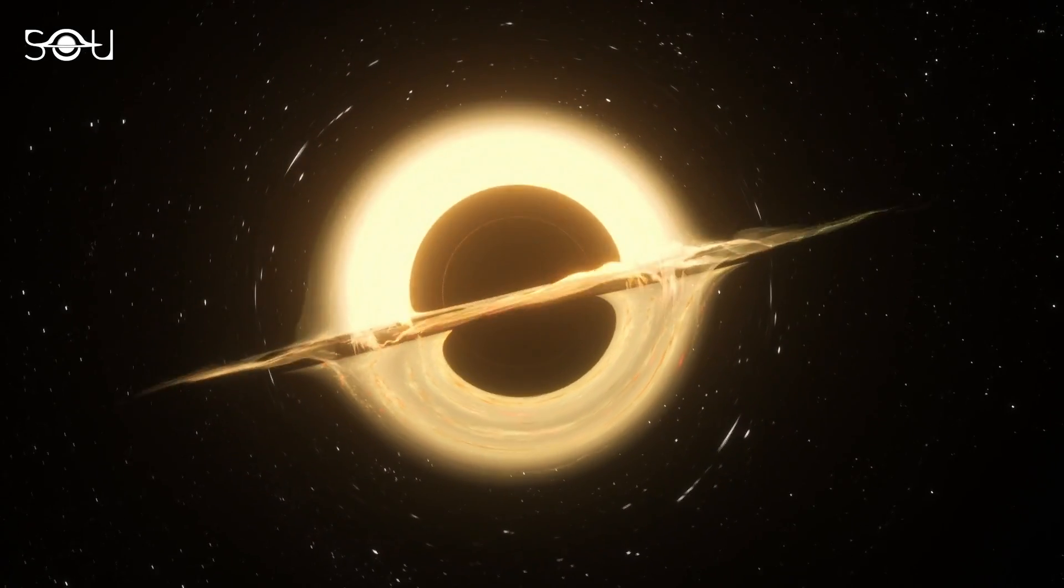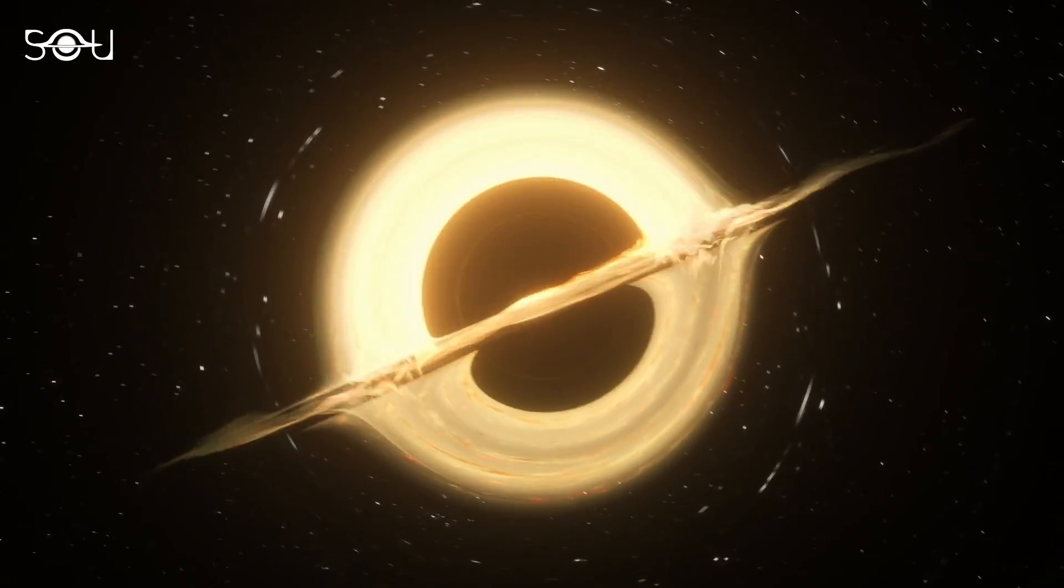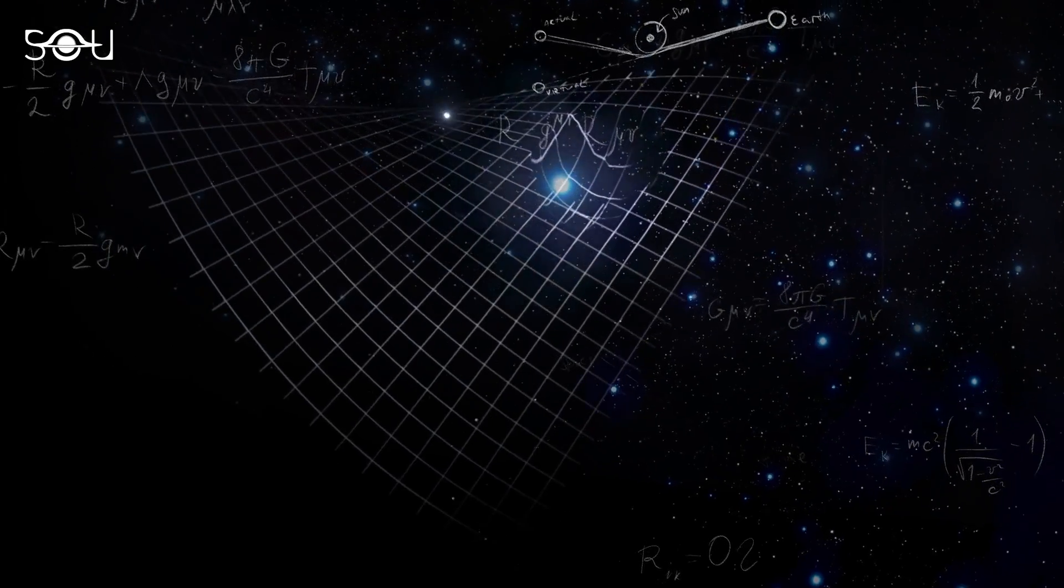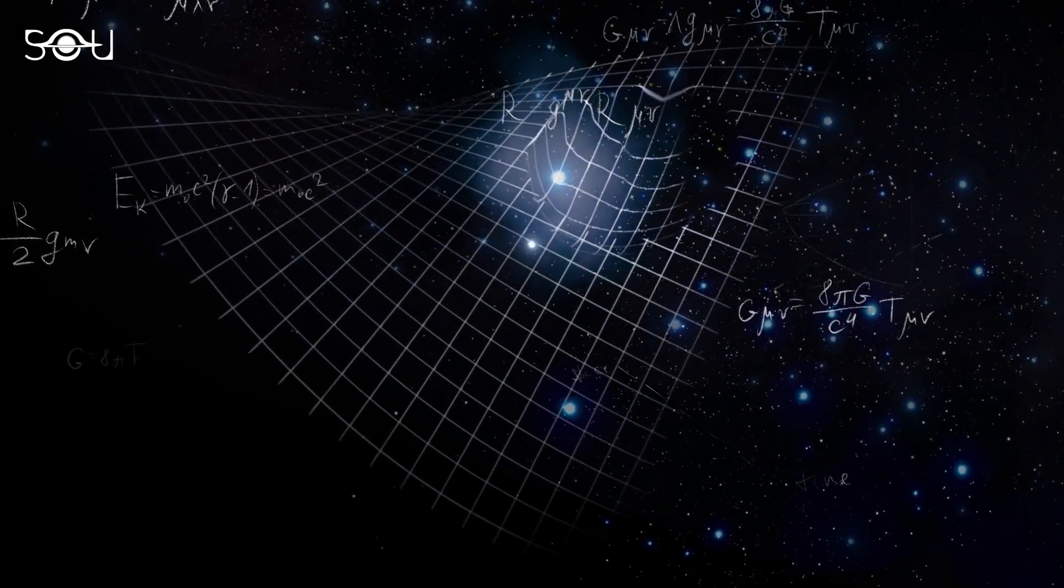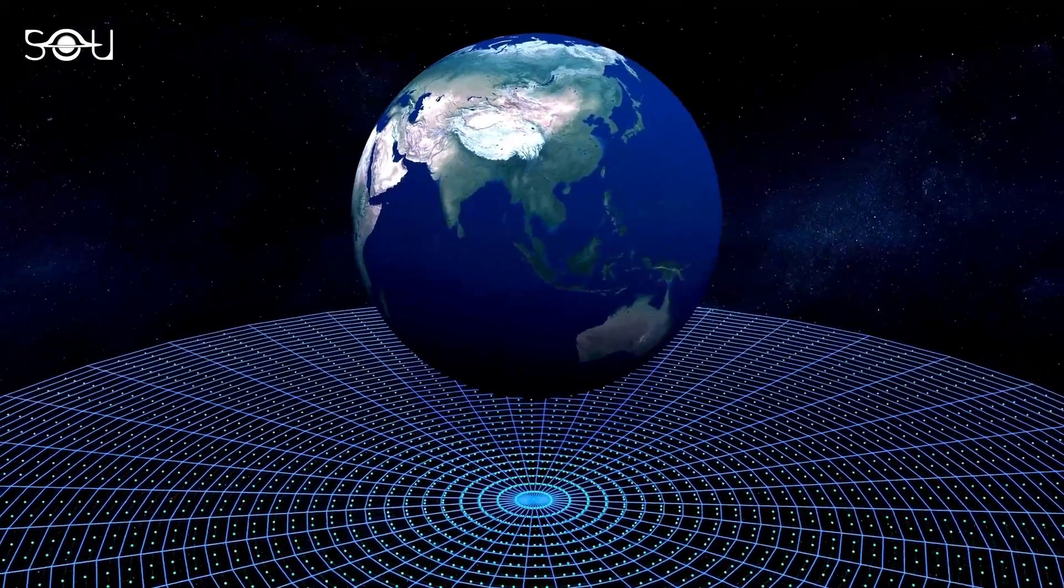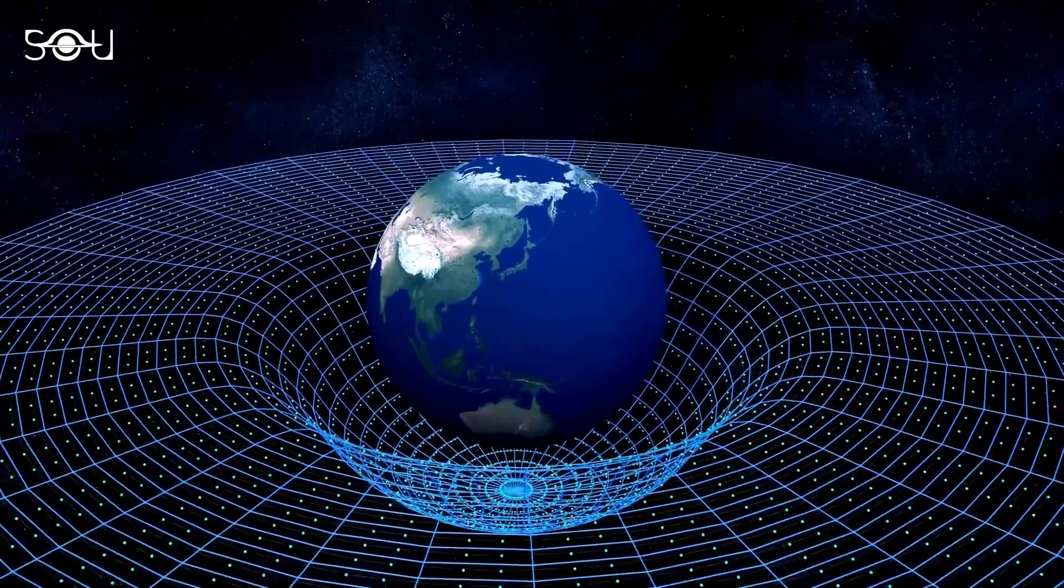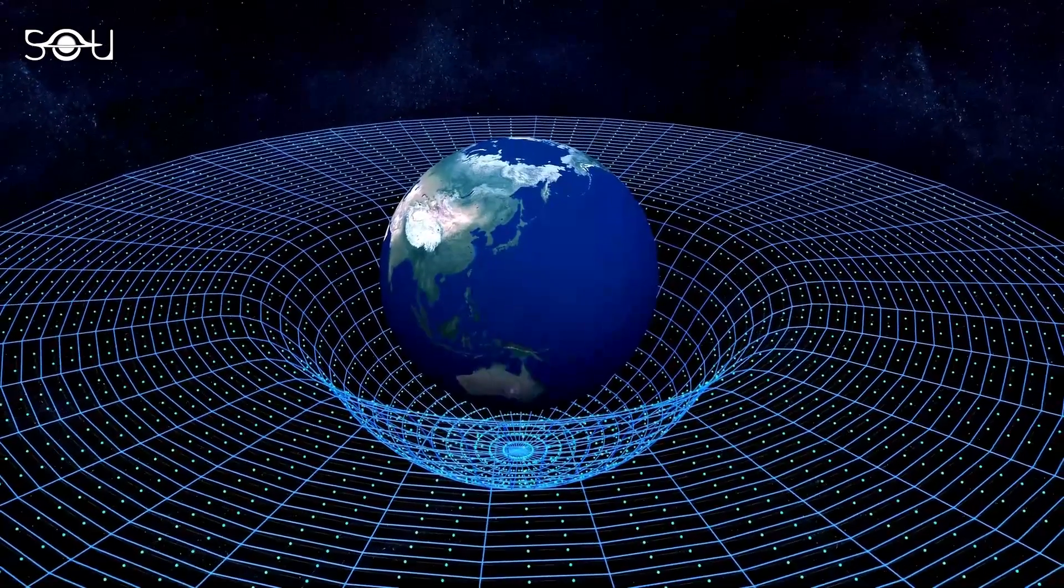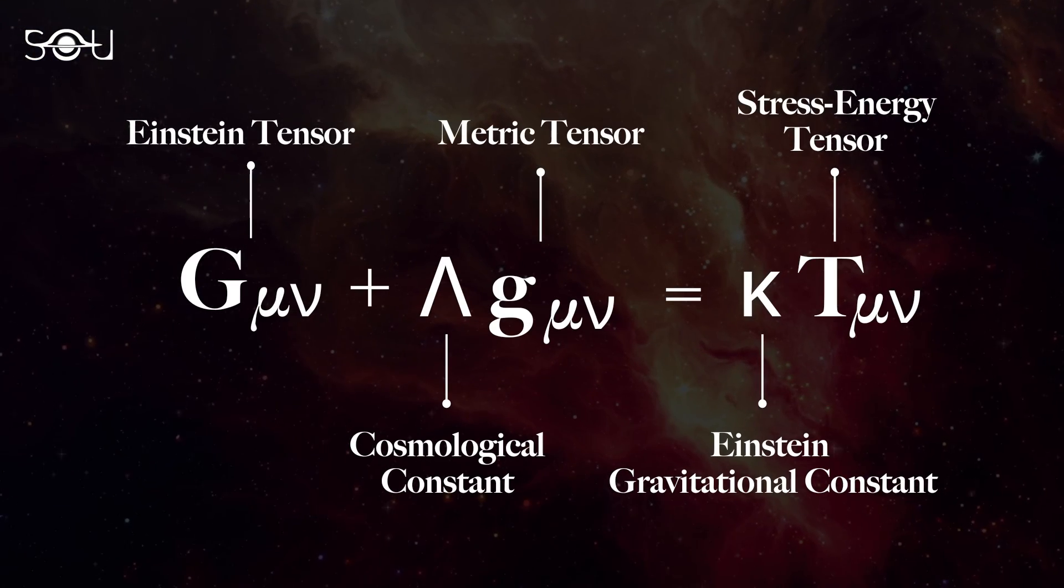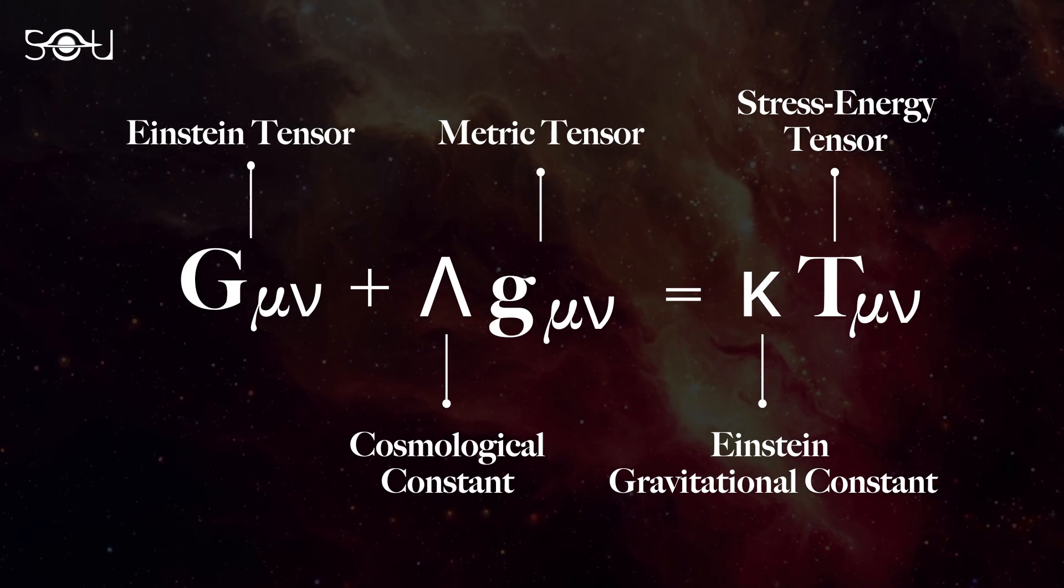Albert Einstein denied the existence of black holes even though the idea of black holes originated from his general theory of relativity. With general relativity, Einstein changed the course of physics. The theory describes gravity as a curvature in the fabric of space and time rather than a force, as proposed by Newton in the 17th century. Through general relativity, Einstein developed the field equations that relate the geometry of space-time to the distribution of matter contained in it.